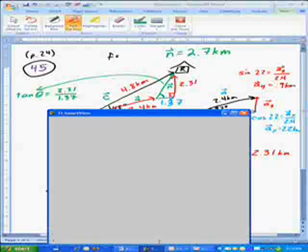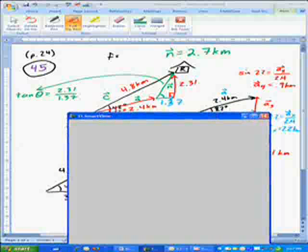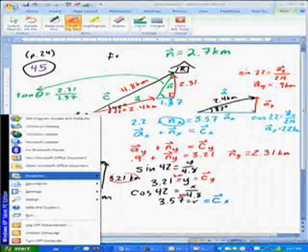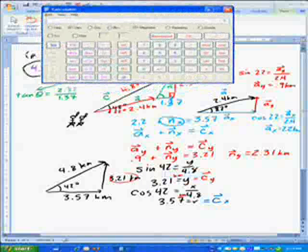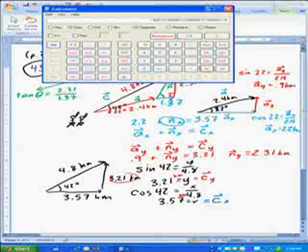So it looks like I have lost my calculator here, which is rather unfortunate. So we'll use my unofficial calculator over here. So we'll do 2.31 divided by 1.37 equals. Now I need to do the inverse tangent, so I'll go inverse tangent, and I get 59.3.